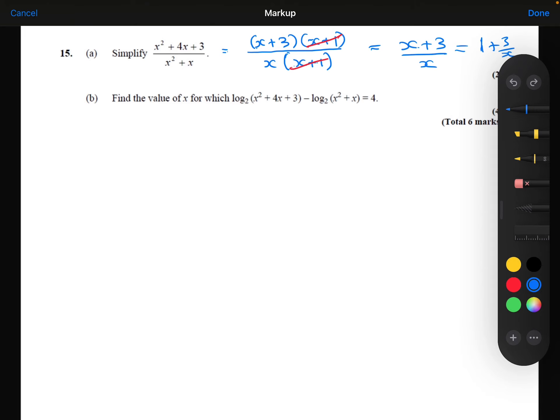So that allows me to combine them together to be a single logarithm, where they are going to be divided by one another. So the x squared plus 4x plus 3 is divided by the x squared plus x.